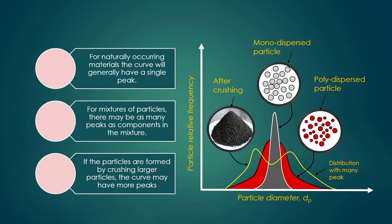For naturally occurring materials — such as sodium hydroxide, aluminium oxide, calcium oxide, calcium carbonate, or ores obtained naturally — the curve will generally have a single peak. This you have to remember. Whereas for mixtures of particles, there may be as many peaks as there are components in the mixer — for different components, different sizes will be there, giving many peaks.